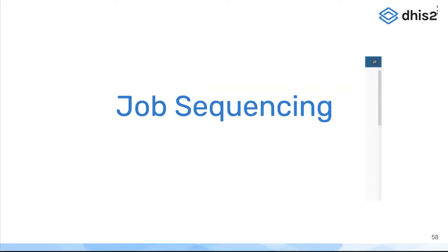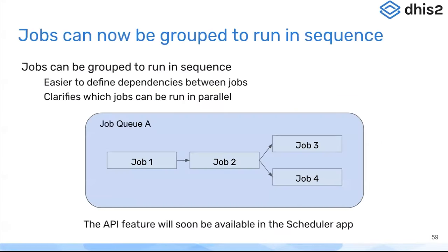The next functionality introduced in version 40 is job sequencing. This is quite exciting for scheduled jobs or scheduled tasks in DHIS2, because you can define a group of jobs that can be run in sequence. This means you know you need to finish the analytics table export before you run a notification job, for example. You can do these now in sequence — run job one, then job two — and those can't run at the same time.